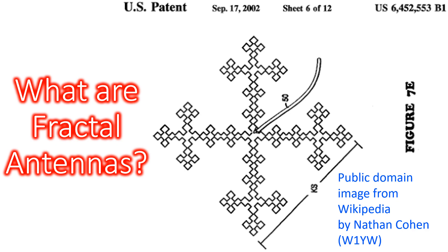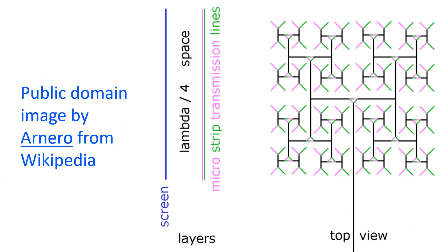The self-similar design can be better understood by having a look at the public domain image from Wikipedia by Nathan Cohen, shown below. The speciality of this design is that fractal antennas are very compact and capable of multi-band operations.